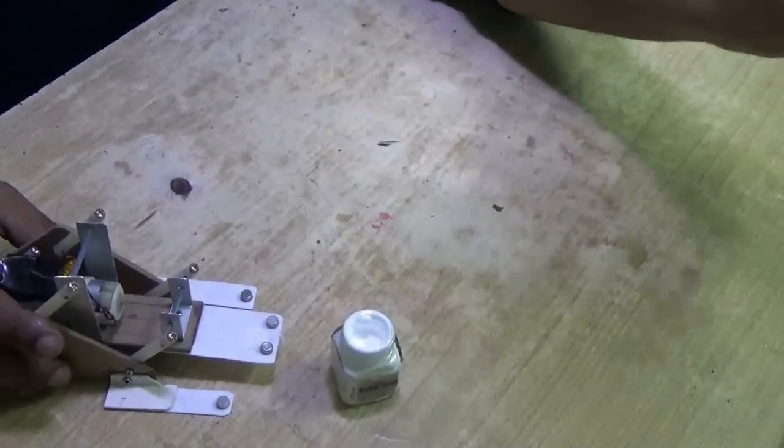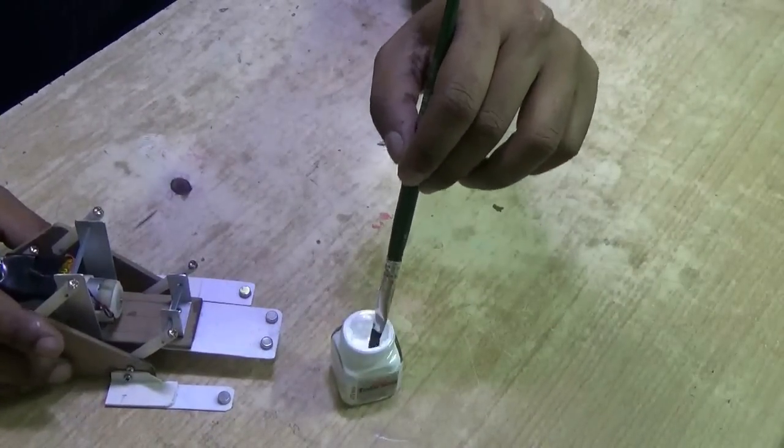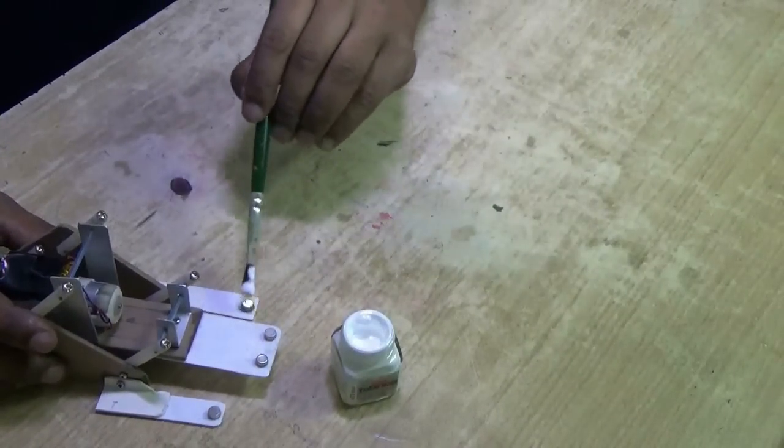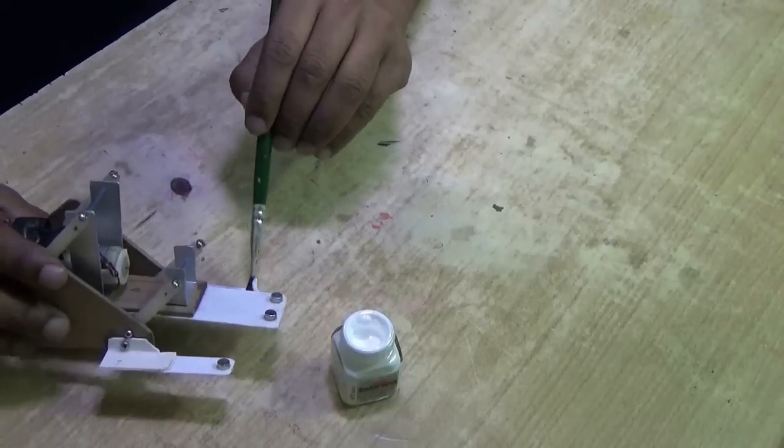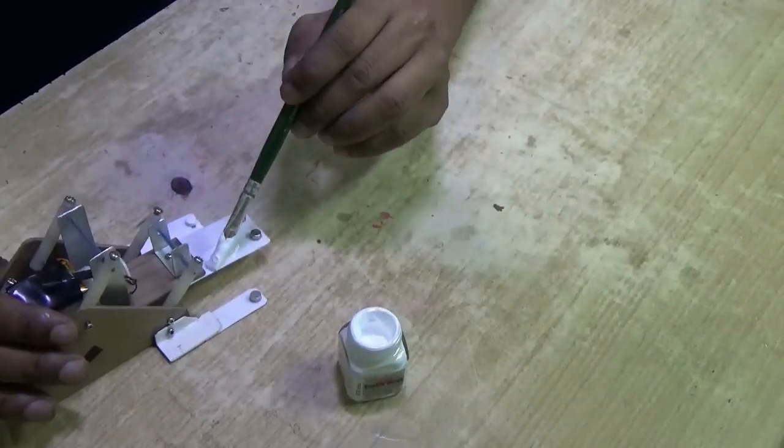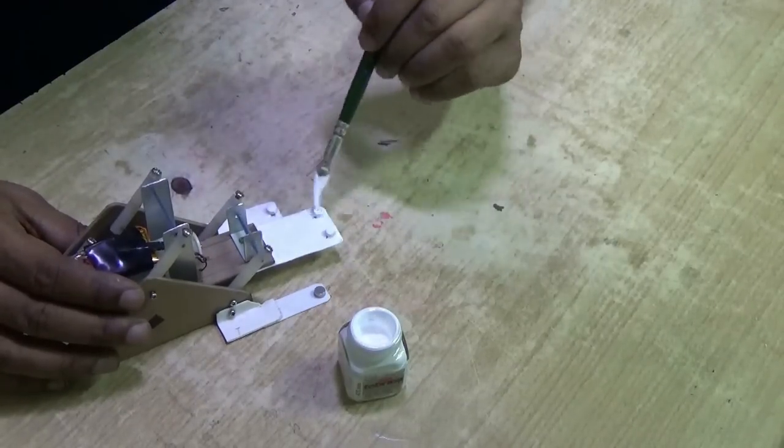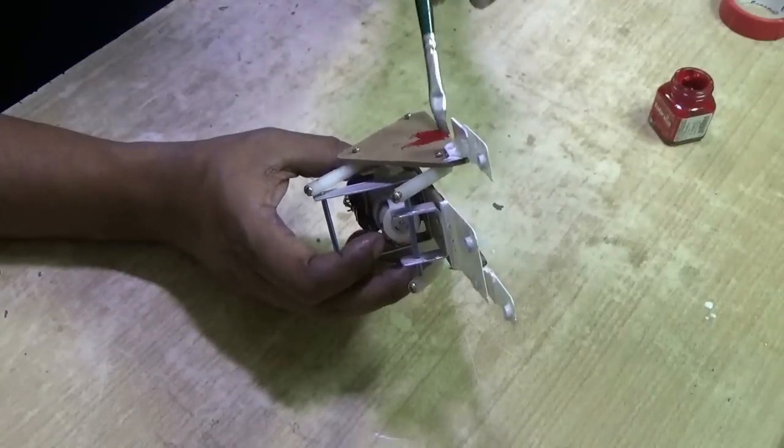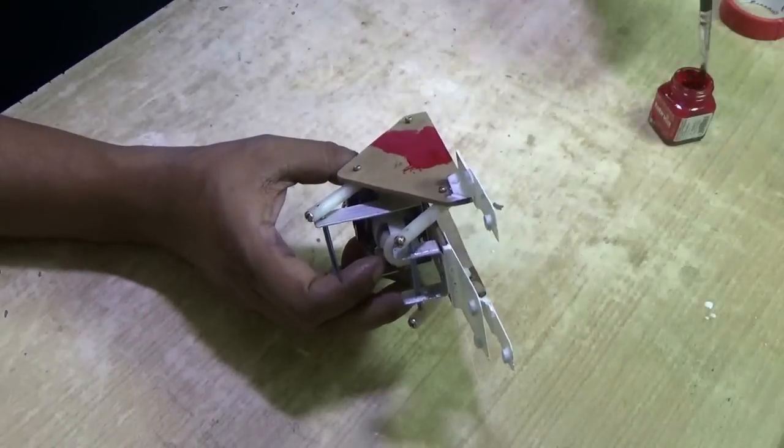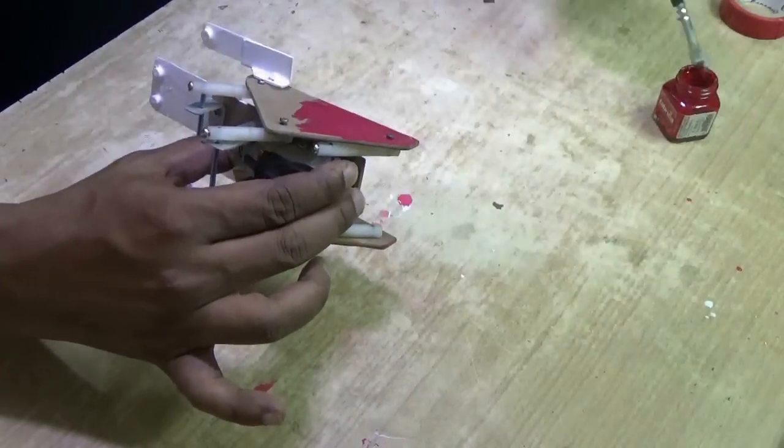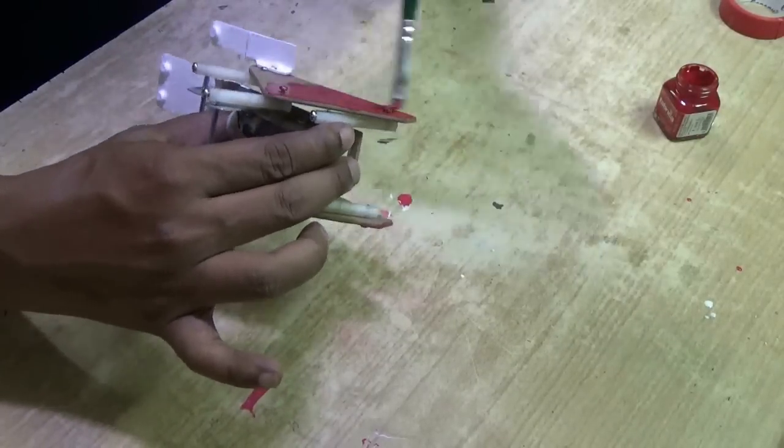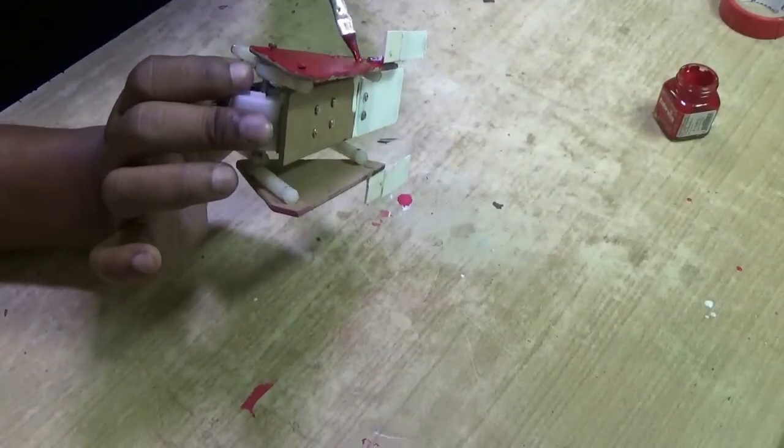I am going to paint. So first I will paint the magnets in white, then the side legs in maroon or red color. Decorate the way you want it to be.